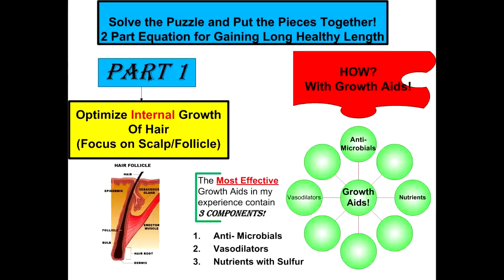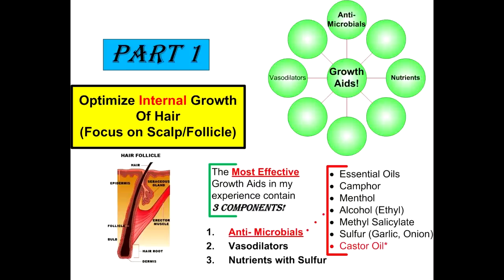To optimize the growth with growth aids, you need to use a product that has three components. Those components are antimicrobials, vasodilators, and nutrients or vitamins with sulfur. You need all three.